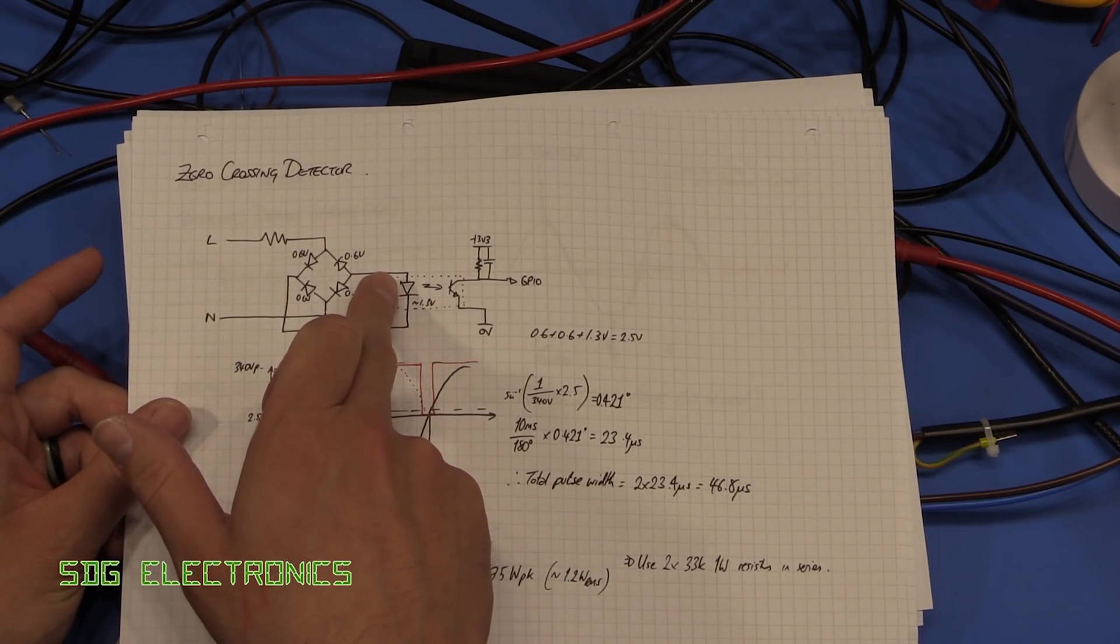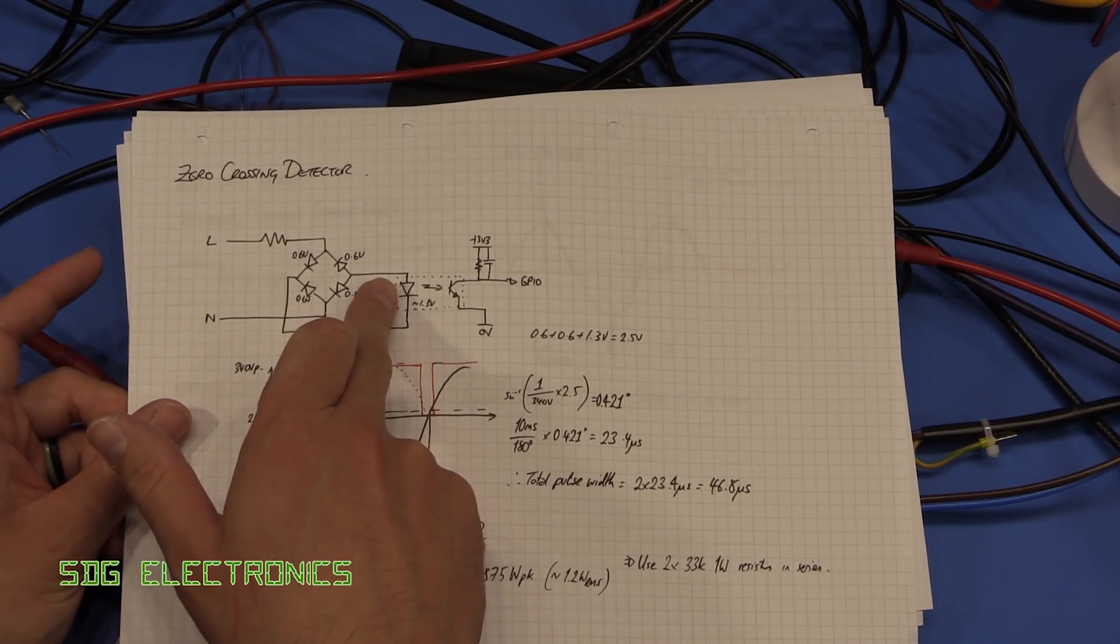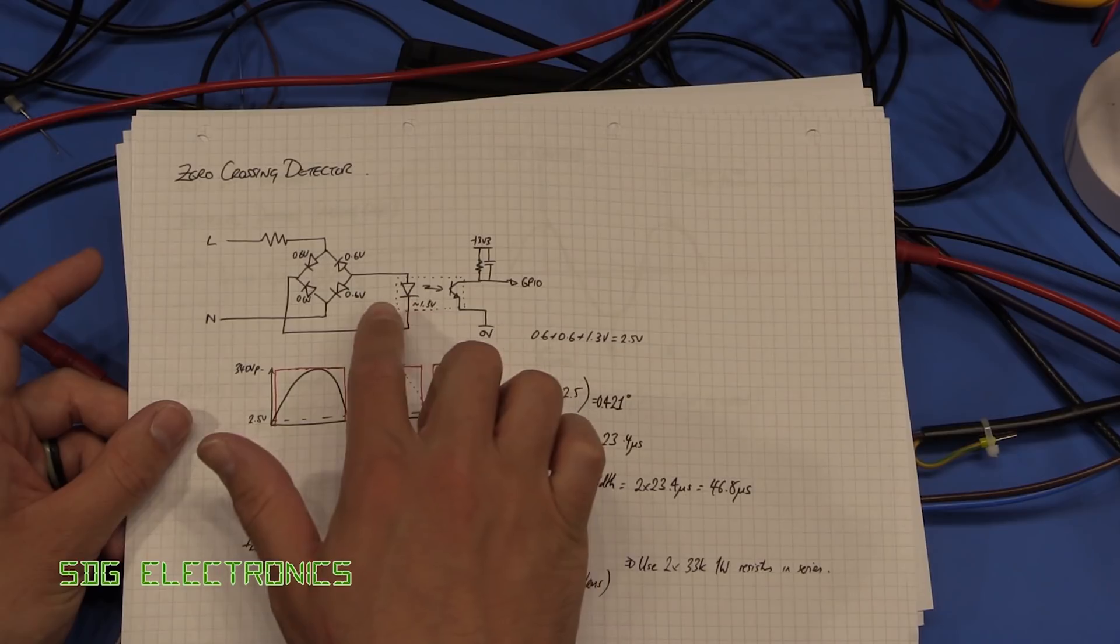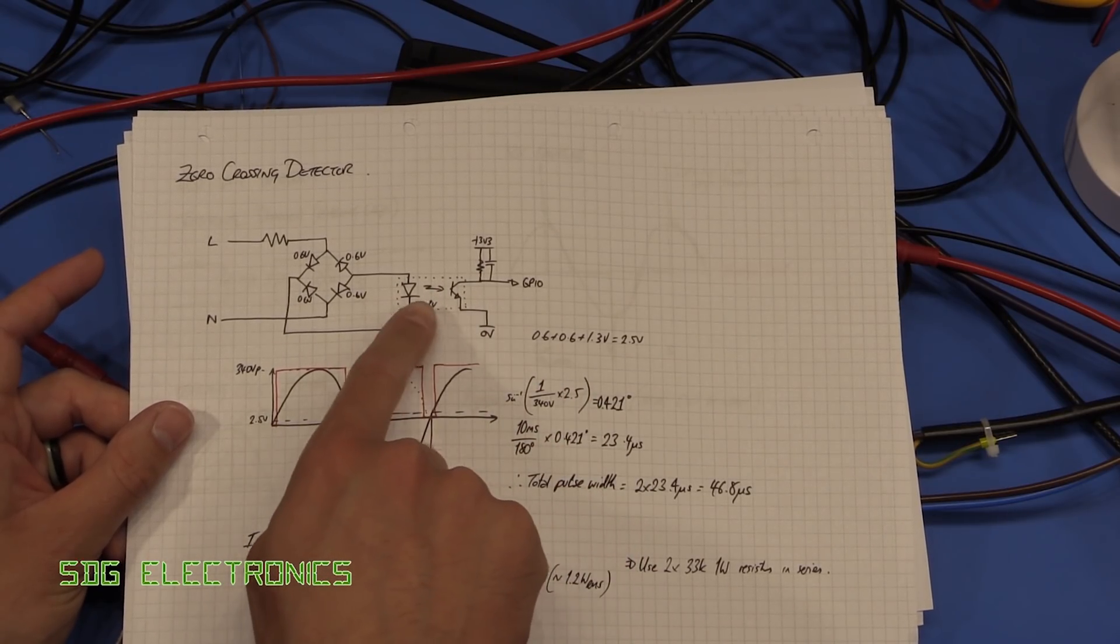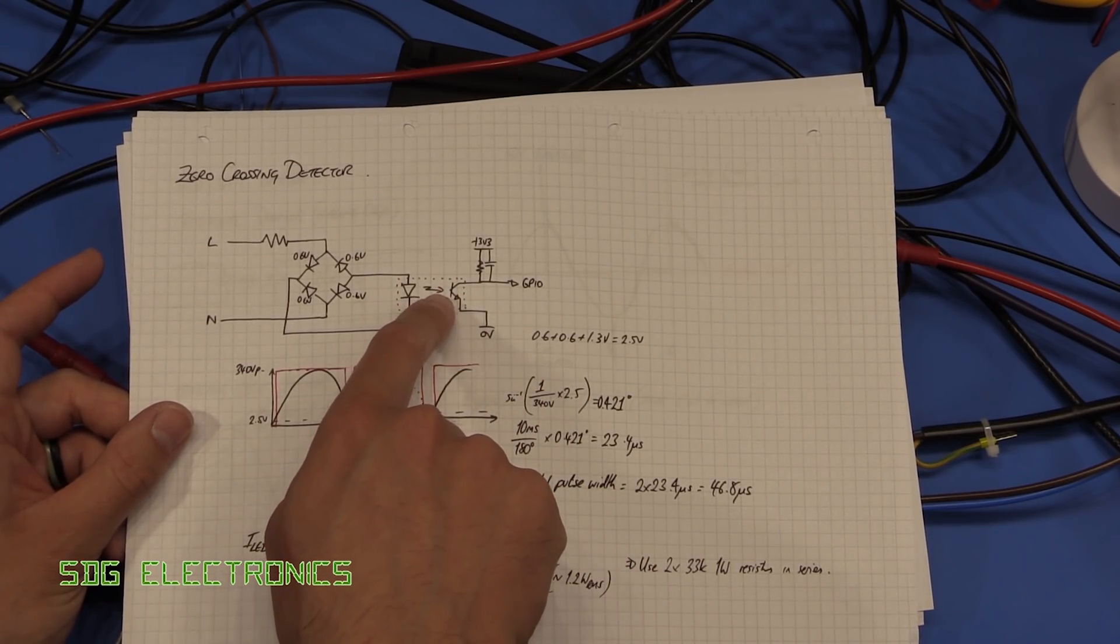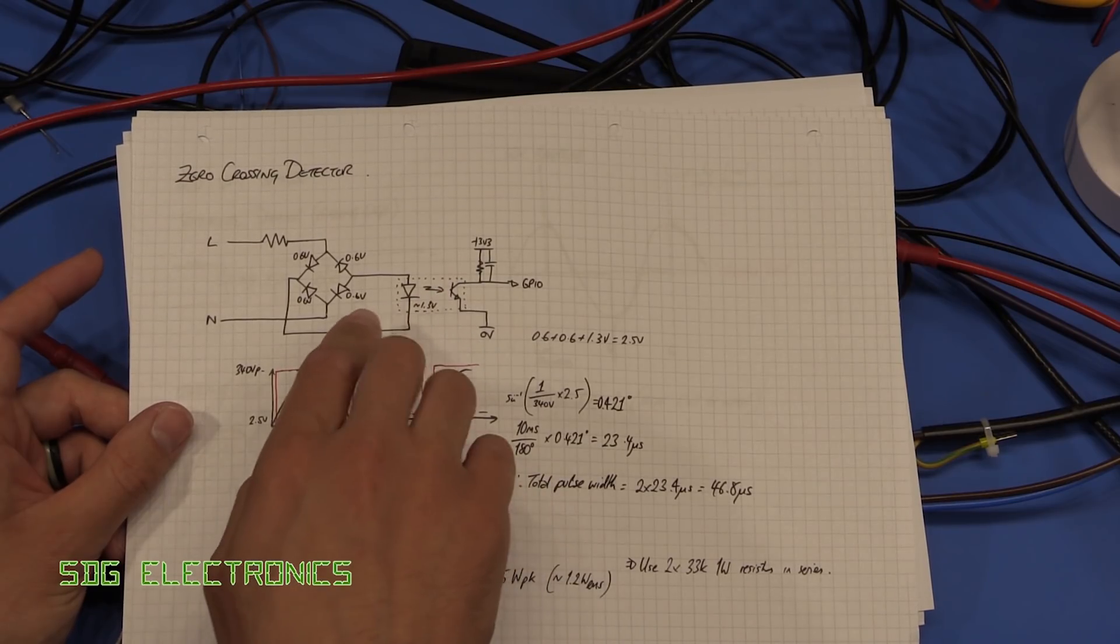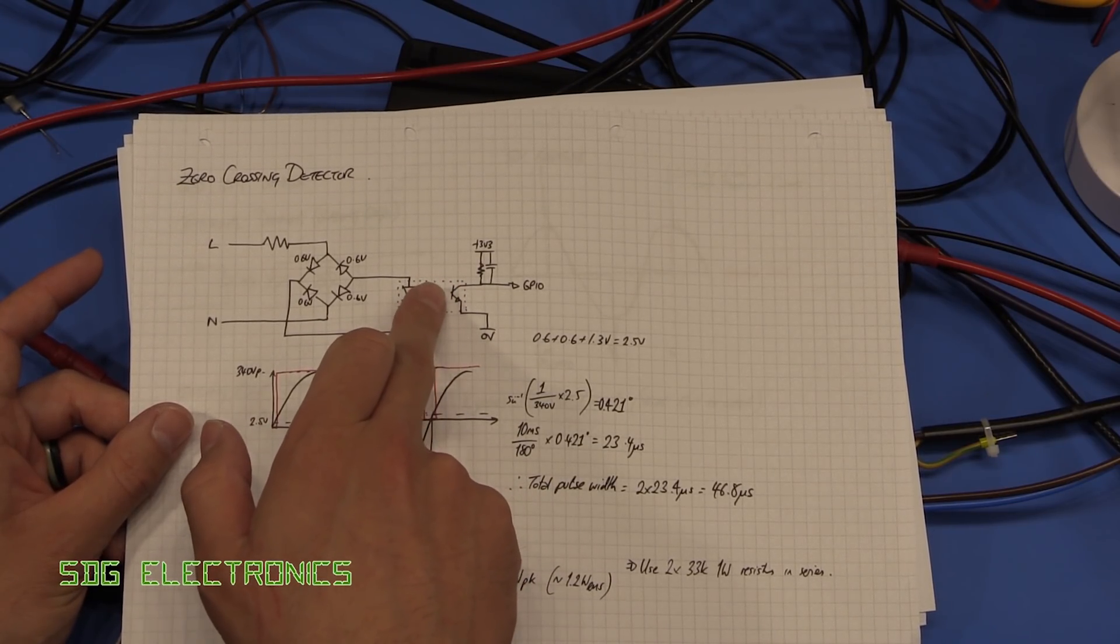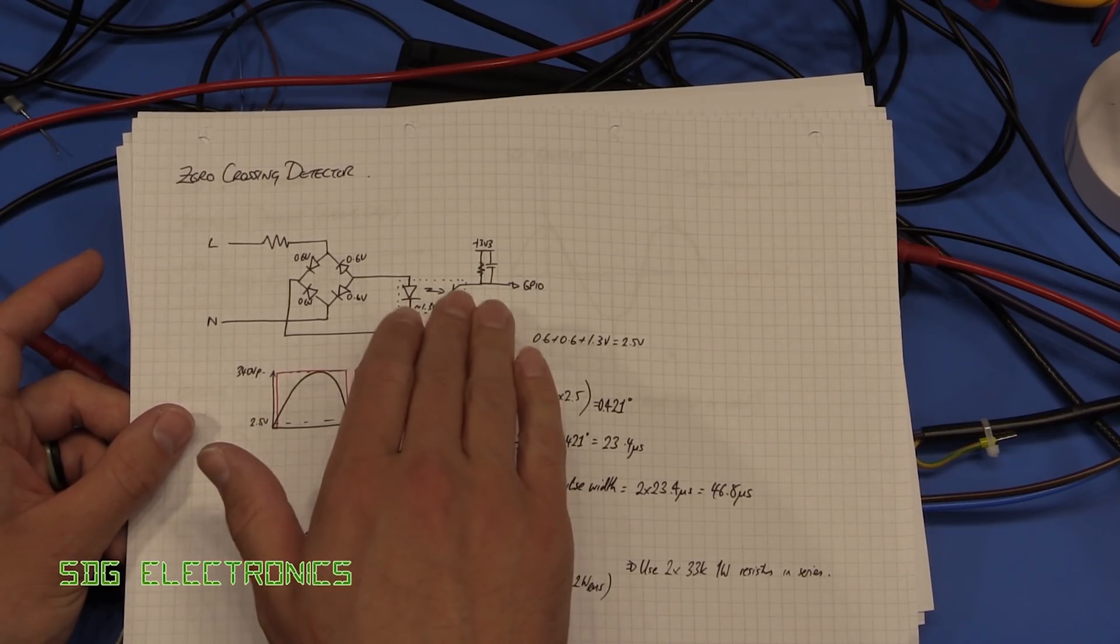first of all the LED will turn on at much lower voltages than that so you get a small amount of current, but also there's what's known as the current transfer ratio and effectively what you're doing is the LED is replacing the base connection on your transistor. So if the LED is not at full brightness, you're basically biasing this transistor on at some point, it's not fully turned on.